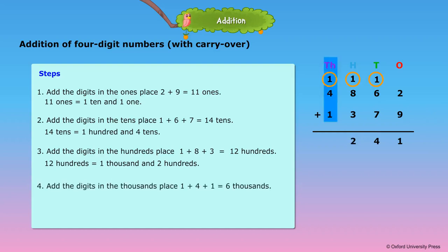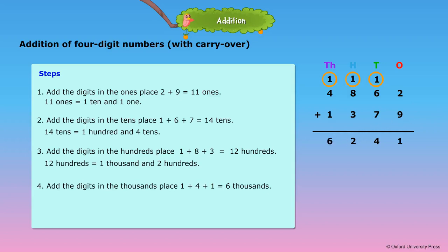Step 4: Add the digits in the thousands place. 1 plus 4 plus 1 is equal to 6,000. Put 6 under 1 in the thousands column. Therefore, 4,862 plus 1,379 is equal to 6,241.